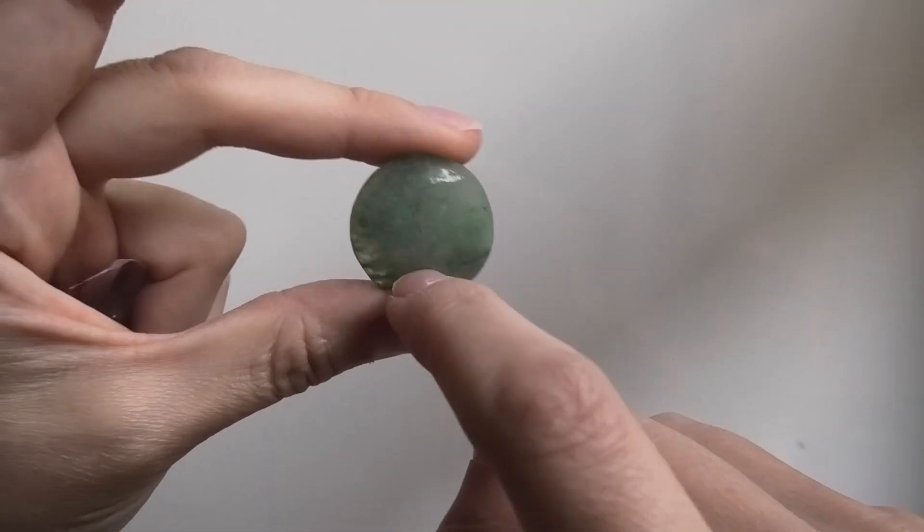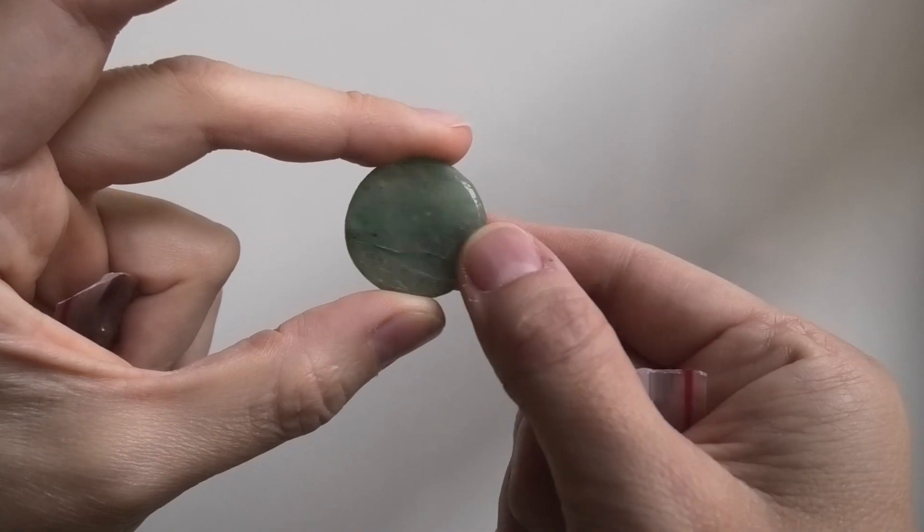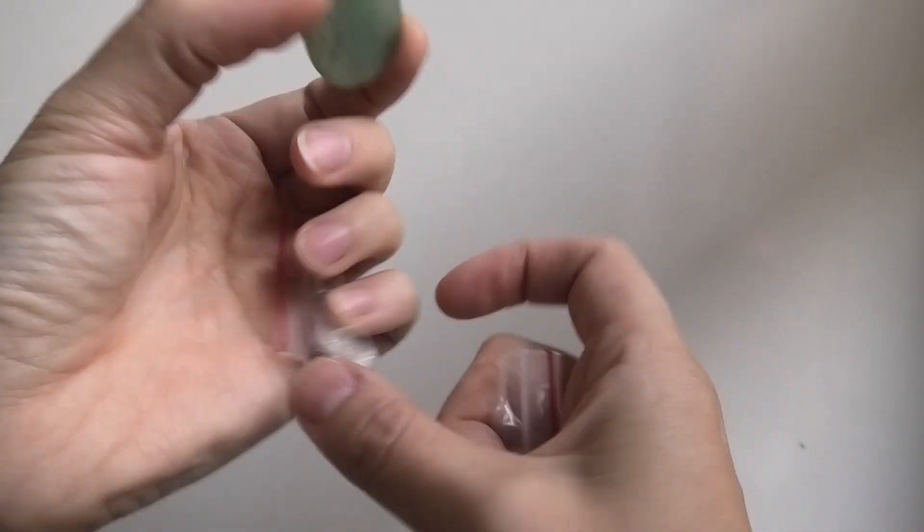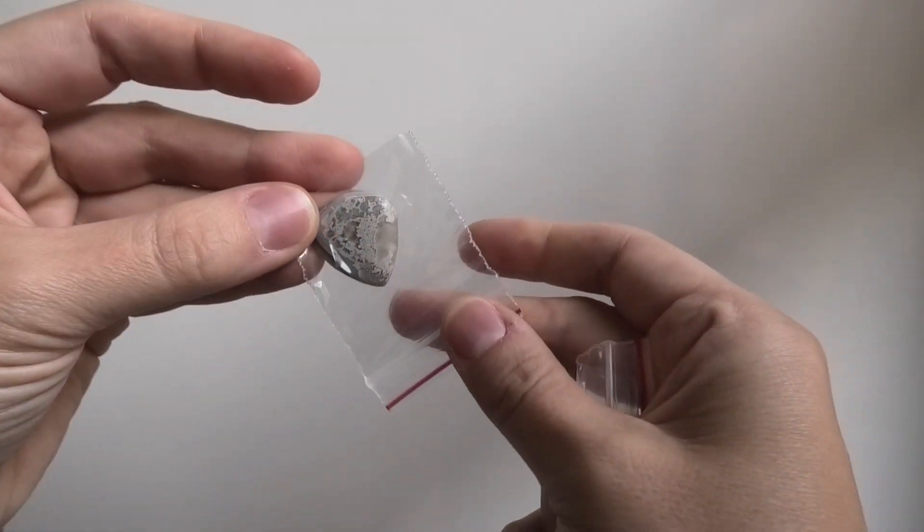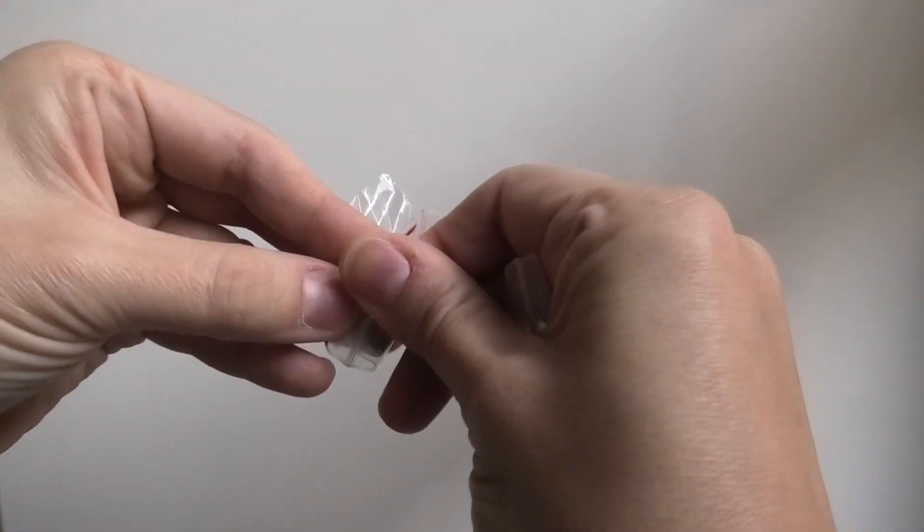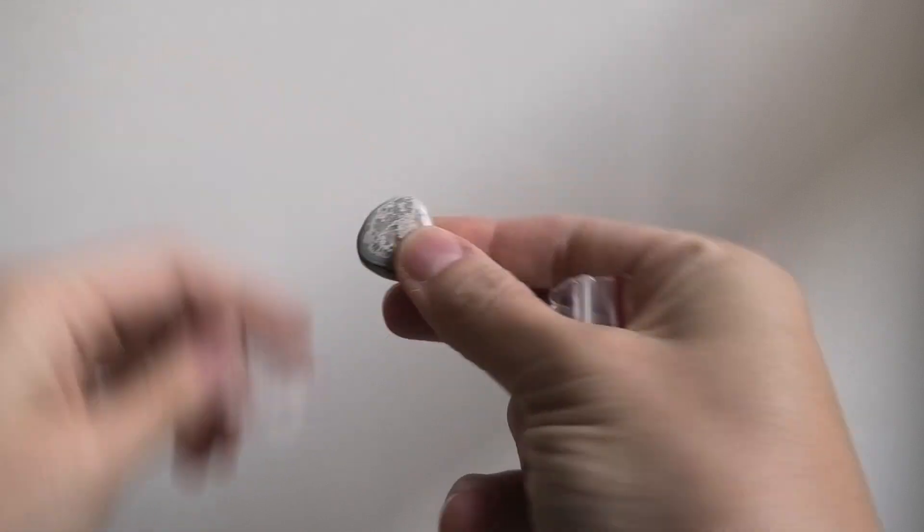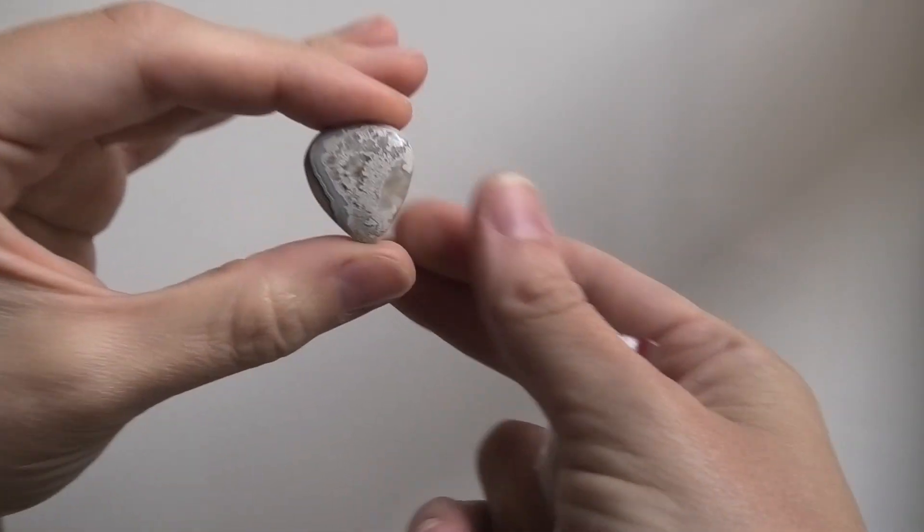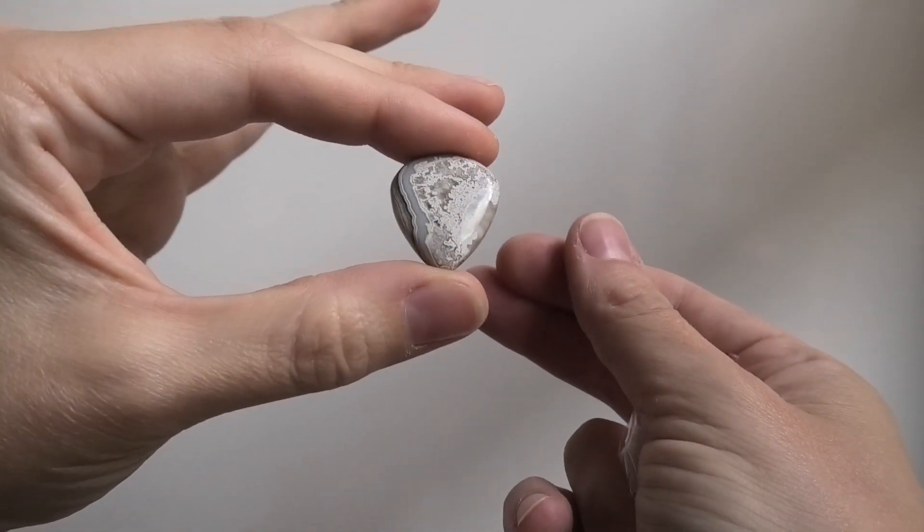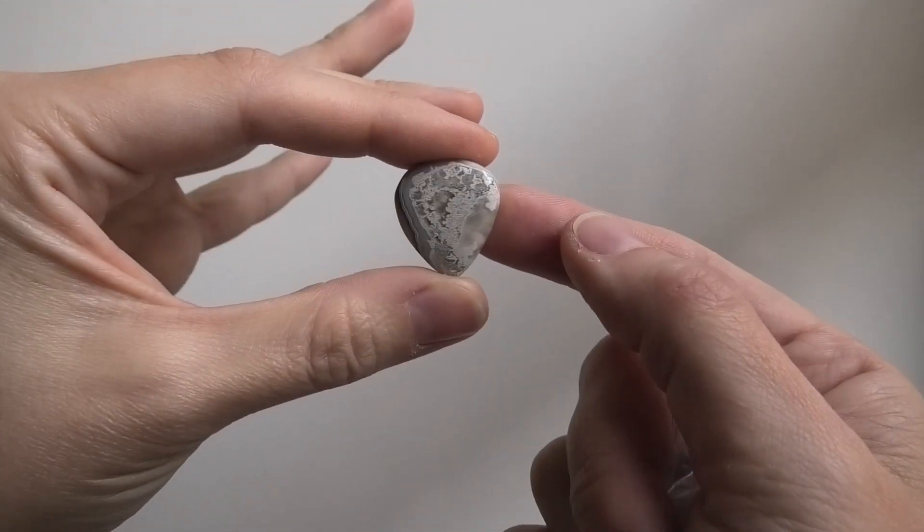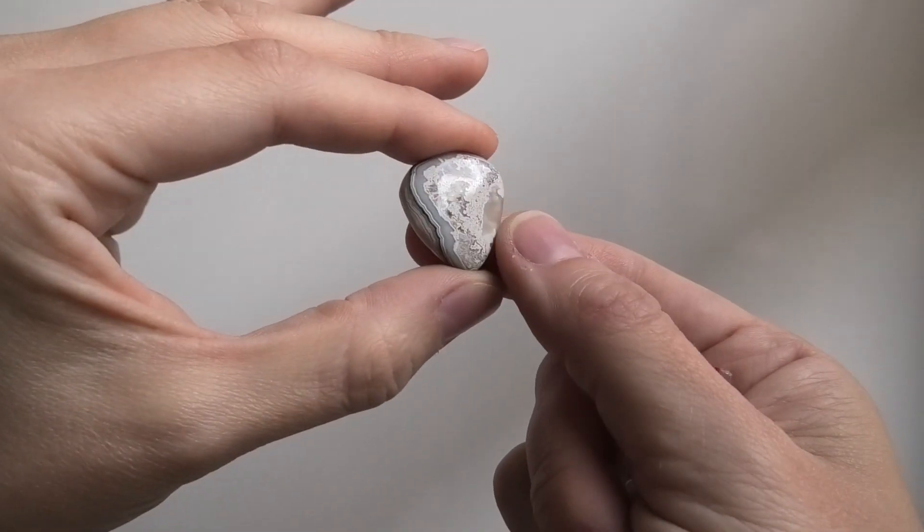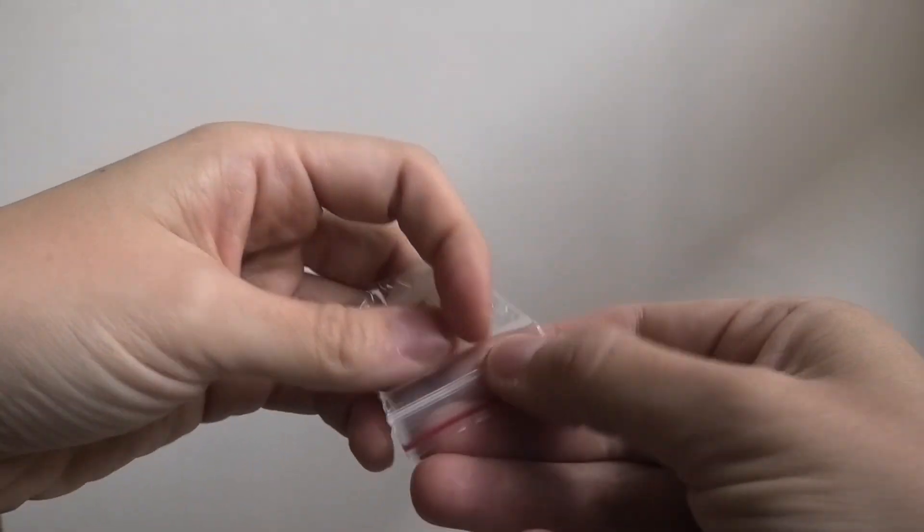Then we have what is this one? This must be like a crazy lace agate. That's what it looks like to me. I've always loved the little designs on those types of stones. So a little teardrop one of that.